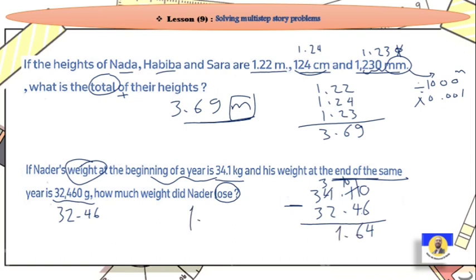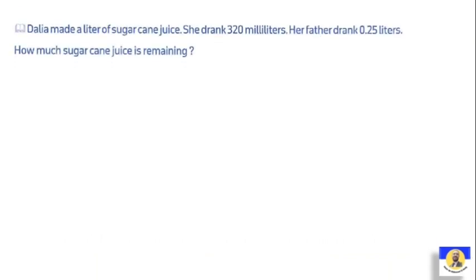Next question: Dalia made one liter, which is 1000 milliliters, of sugarcane juice. She drank 320 milliliters and her father drank 0.25 liters. How much sugarcane juice is remaining? She made juice, she drank some and her father drank some. We want to know how much is left.